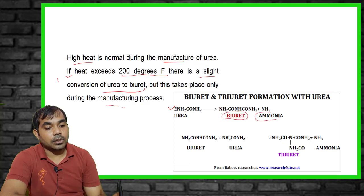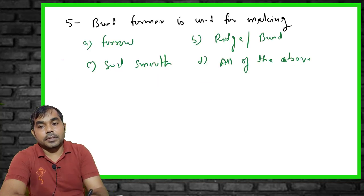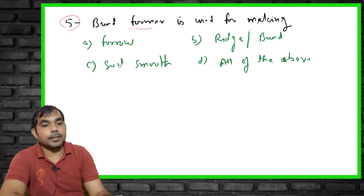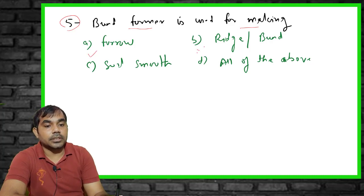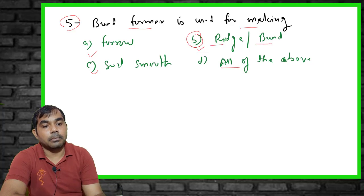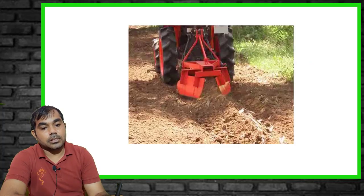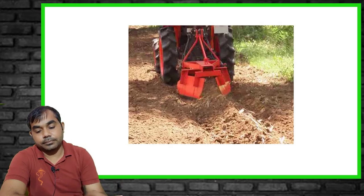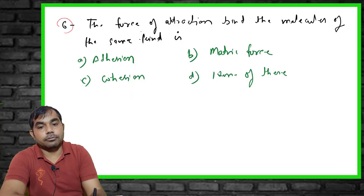The fifth MCQ asks about a farmer implement used for making ridges and bunds. The right answer is B — a ridger. This implement is used specifically for ridge and bund making in the field.